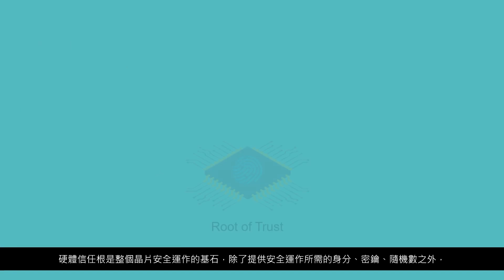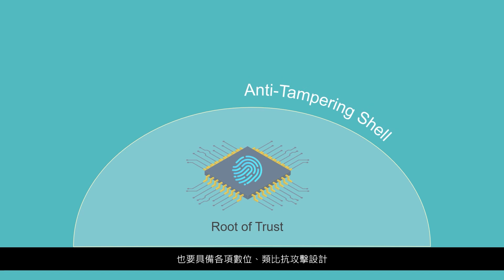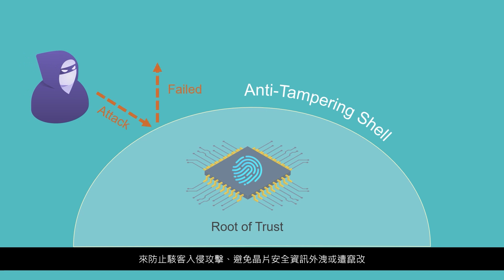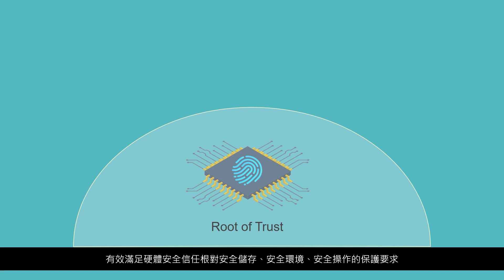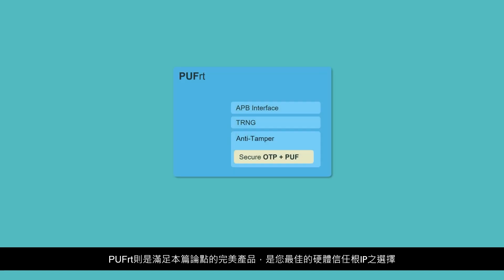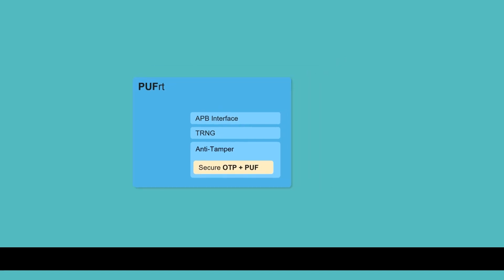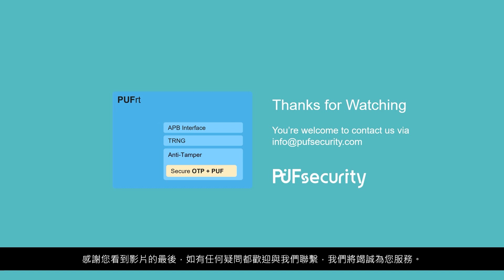The hardware root of trust is the cornerstone foundation of the entire chip's secure operations. In addition to providing the identity, keys, and entropy source required for secure operations, it must also be equipped with a full suite of analog and digital anti-tampering designs to protect the chip's trust base from being leaked or tampered with. PuffRT satisfies the protection requirements of a hardware root of trust for secure storage, secure environment, and secure operation, making it the ideal hardware root of trust IP. Thank you for watching this video. If you have any questions, please feel free to contact us and we will do our best to answer your questions.